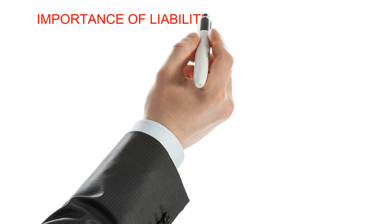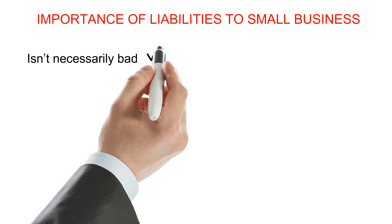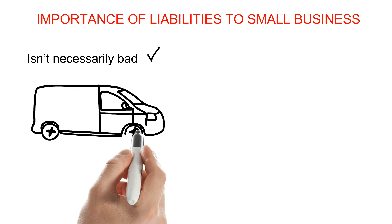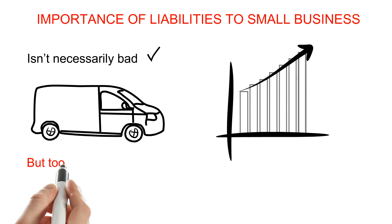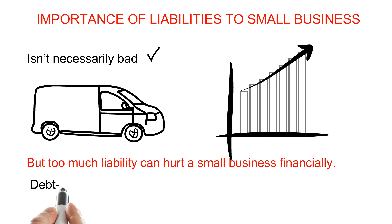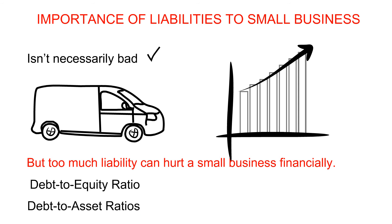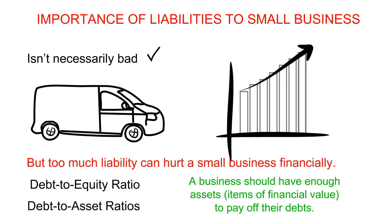Liabilities, including money owing, aren't necessarily bad. Some loans are required to purchase new assets like tools or vehicles that help a small business operate and grow. But too much liability can hurt a small business financially. Owners should track their debt-to-equity ratio and debt-to-asset ratios. Simply put, a business should have enough assets, which are items of financial value, to pay off their debts. On another video, we will look at calculating these ratios.